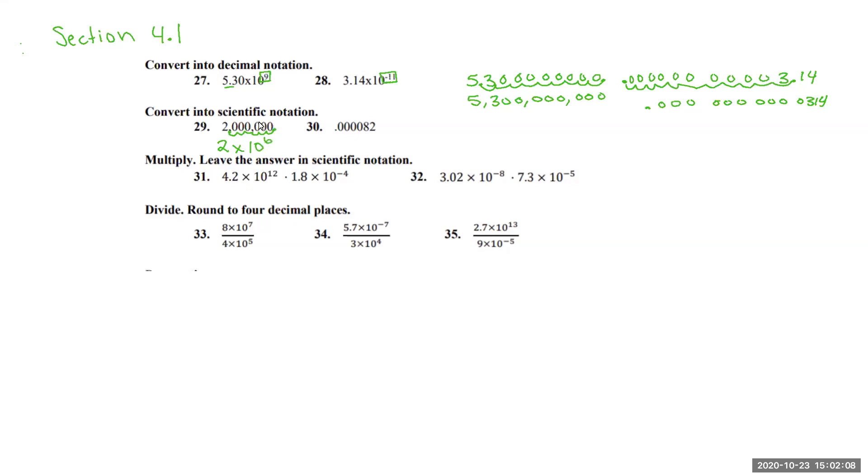Whenever we're changing from decimal to scientific, we have to think about what the exponent is going to be, whether it's going to be positive or negative. In this case, it's going to be positive because if we want to go from 2 to 2 million, we have to move it to the right 6 places.